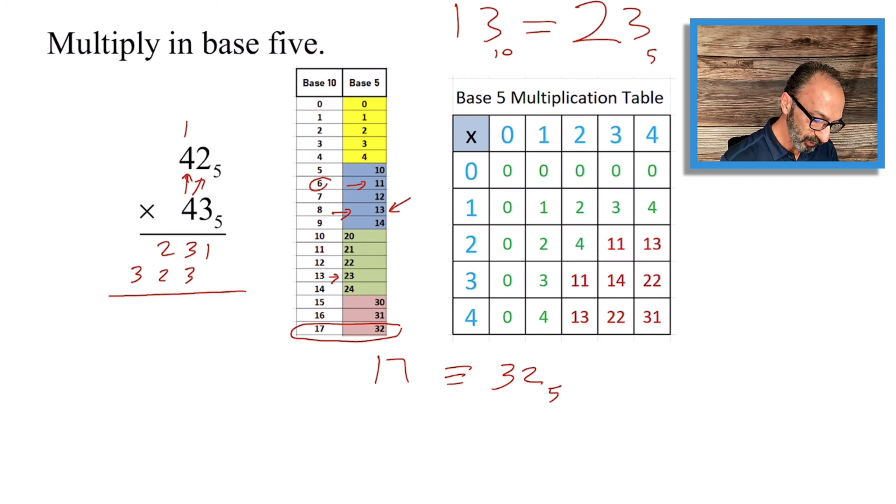So we're gonna carry the 1. 2 and 2 and 1 is 5, but 5 is just one zero zero. We carry the 1, and 1 and 3 is 4, and that should do it.